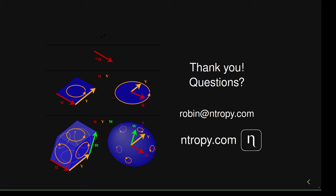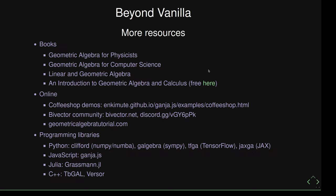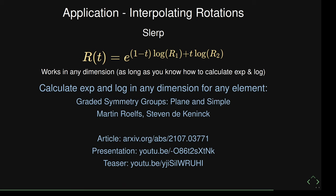Q: How is this connected to Lie algebra? The rotors are part of the Lie group of rotations — in vanilla GA it's SO(3), and in PGA it's the pin group. If you take the logarithm of the rotors, you get the Lie algebra elements. So the bivectors are actually the generators — they live in the Lie algebra, and if you exponentiate them, you get the Lie group elements. With spherical interpolation, you're interpolating in the Lie algebra and then exponentiating, which gives something meaningful — directly interpolating in the Lie group space wouldn't work properly.